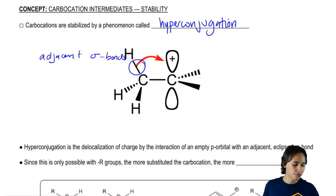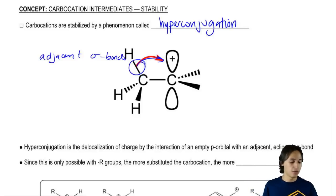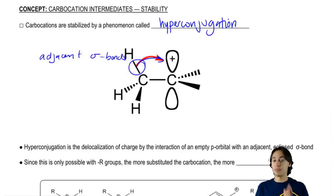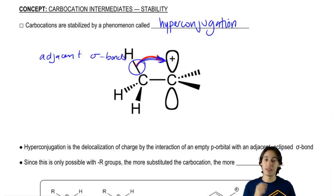So the more sigma bonds I have close to it that are able to donate, the more stable my positive is going to be. Because of the fact that my positive is missing a ton of electrons, if I can share a little bit of these electrons into that positive charge, it's going to make it a lot more stable.